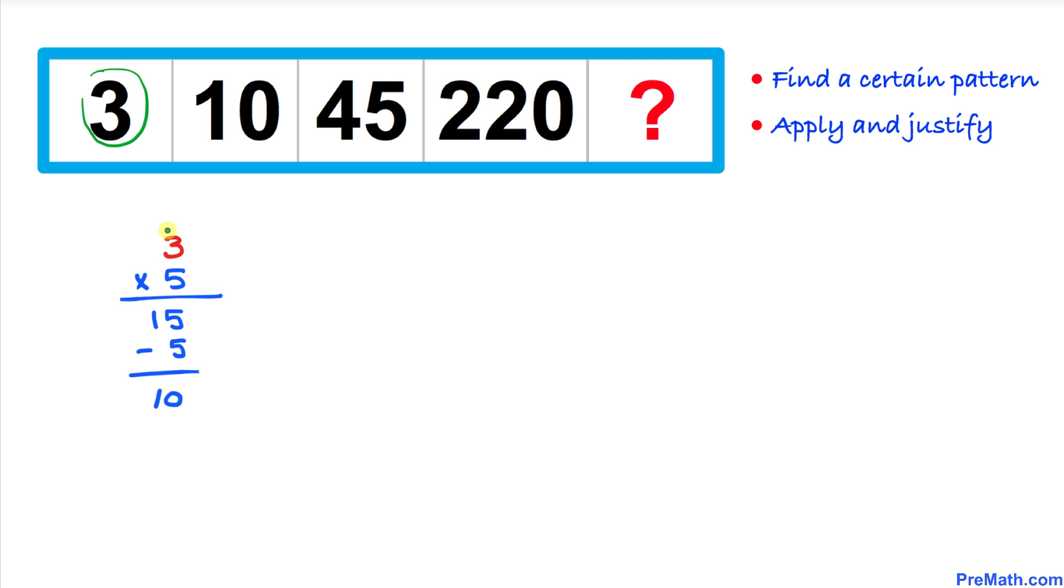Let's focus on this number 3. I just copy it down over here, and we are going to multiply by 5. So 3 times 5 is going to give us 15, and we take away 5, and we are going to get 10. And that's what we got over here.